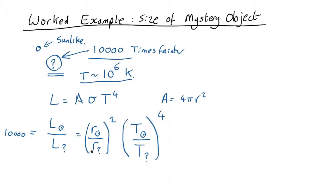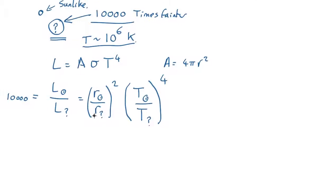So let's rearrange this to get that as a subject. We know that (R_sun/R_mystery)² equals L_sun/L_mystery. And now, if we're taking the temperature over to the other side, we have to invert it, so we get (T_mystery/T_sun)^4.